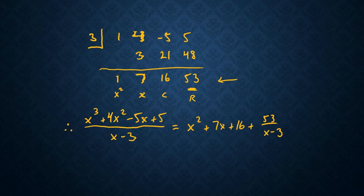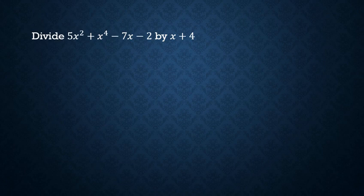And that's the method of synthetic division — very, very handy. When you can use it, it's a lot quicker, but you just have to be sure you don't get tripped up. Try this one on your own: divide 5x² + x⁴ - 7x - 2 by x + 4. See if you can find the quotient. Press pause, solve the problem, and press play when you think you have it.